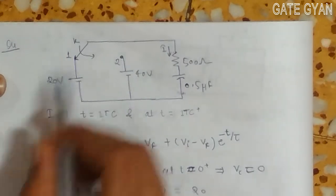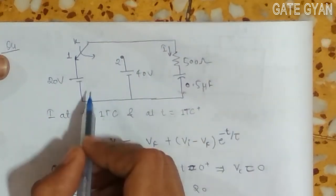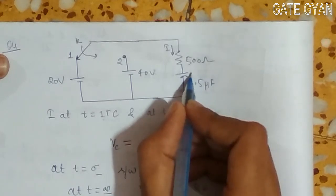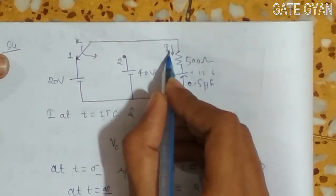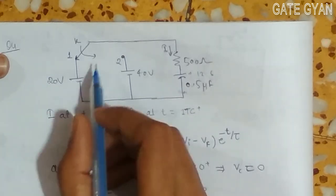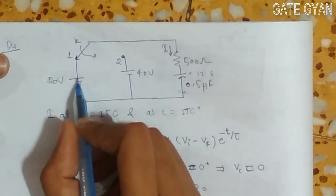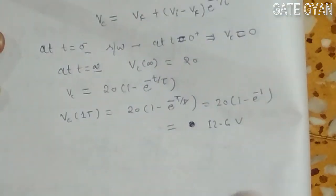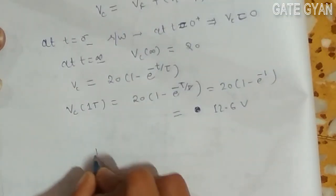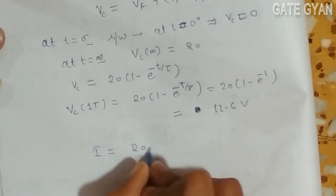From this circuit, when my switch is closed at 1 time constant, my vc value is 12.6. So I can get this current by using KVL. 20 minus 12.6 divided by 500.